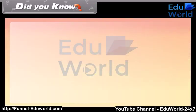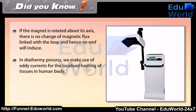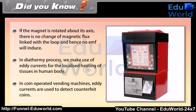Did you know: if the magnet is rotated about its own axis, there is no change of magnetic flux linked with the loop and hence no EMF will be induced. In the diathermy process, eddy currents are used for the localized heating of tissues in the human body. In coin-operated vending machines, eddy currents are used to detect counterfeit coins.